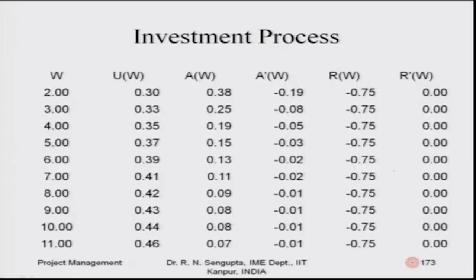Continuing in the same sequence, I write down values of w in the first column and u(w) in the second column. The third and fourth columns — u prime and u double prime — are skipped for you to do yourself. Based on that, you find a, a prime, r, r prime. Note that a prime is negative because c minus one is negative since c is less than one, and r prime is zero — confirming constant relative risk aversion and decreasing absolute risk aversion.